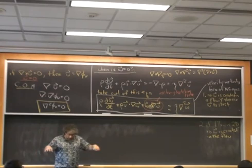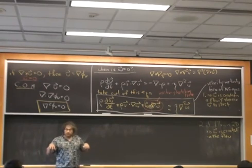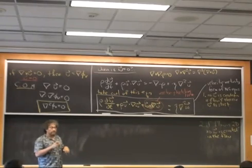But then I just told you about an experiment where I have a flow with no vorticity to start with, and I apply a pressure and then there's vorticity. So which part of this is wrong?